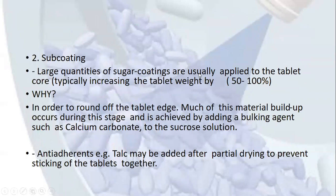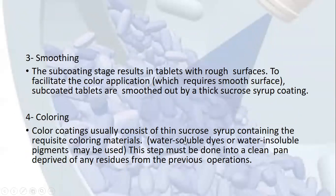Sub-coating is applied to round off the tablet edges; large quantities of sugar coatings increase the tablet weight by 50 to 100%. Bulking agents such as calcium carbonate are added to the sucrose solution, and talc may be added after partial drying as an anti-adherent to prevent tablets from sticking together. The sub-coating stage results in tablets with rough surfaces, so sub-coated tablets are smoothed by a thick sucrose syrup coating. Color coatings consist of thin sucrose syrup containing water-soluble dyes or water-insoluble pigments, applied in a clean pan free of residues from previous operations to avoid defective coloring.